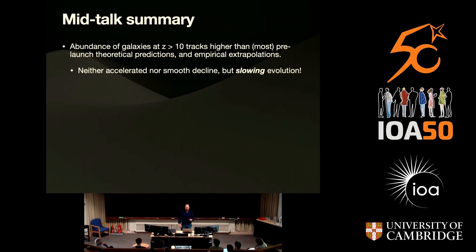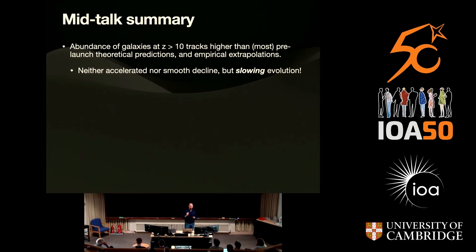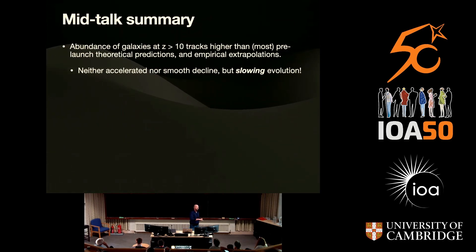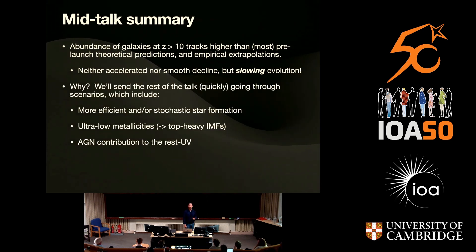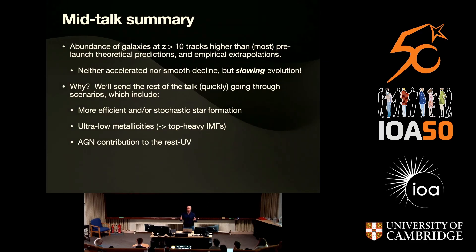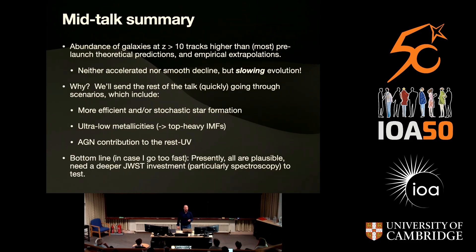Mid-talk summary: the abundance of galaxies at redshift greater than 10 from CEERS and NGDeep is tracking higher than most pre-launch predictions as well as empirical extrapolations. We're seeing neither an accelerated decline nor a smooth decline, but a slowing or shallowing decline. So why is this? It could be due to more efficient star formation and/or stochastic star formation; it could be due to ultra-low metallicities driving top-heavy IMFs, making things more UV luminous; or it could be due to AGN contribution to the rest-frame UV. I'm going to show that each of these is plausible, and the bottom line is that to distinguish between them we really need an even greater investment, especially in spectroscopy but also in deep imaging.